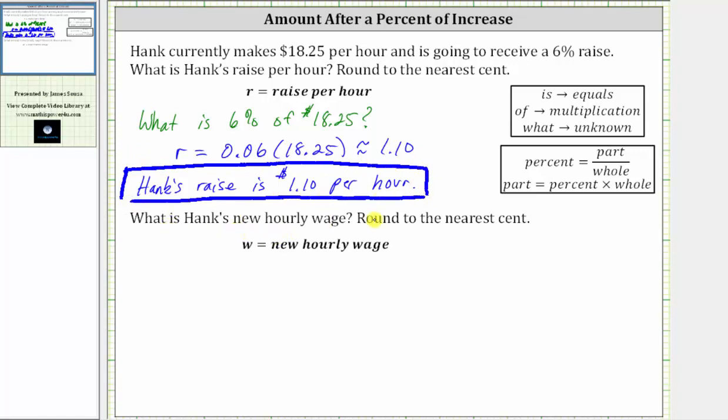Next, what is Hank's new hourly wage? Round to the nearest cent. There are a couple ways of doing this. One way is to simply add the raise per hour to the current hourly wage of $18.25, which would give us W is equal to $18.25 per hour plus $1.10 per hour, which gives us $19.35 per hour.